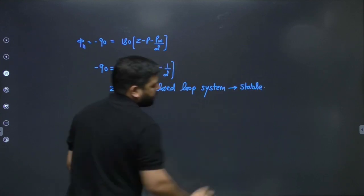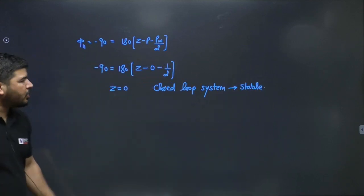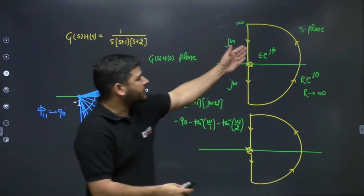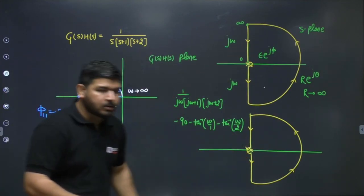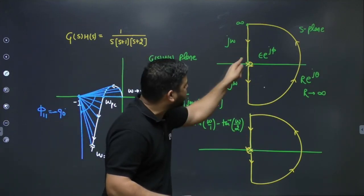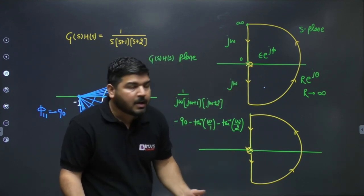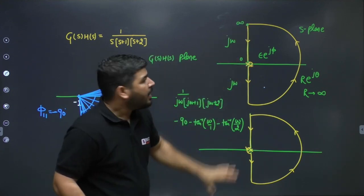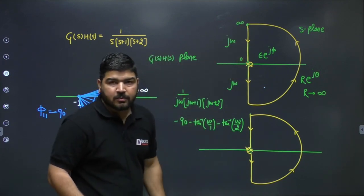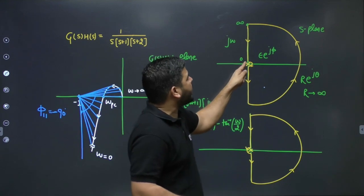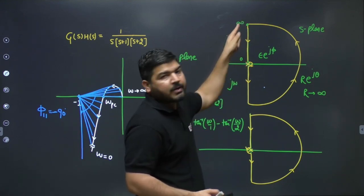Since Z = 0, the closed-loop system is stable. This result holds regardless of which contour you take — whether excluding or including the pole at the origin — because we are only examining the jω axis with ω from ∞ to 0. Note: if ω varied from 0 to ∞, you would need to negate the formula.